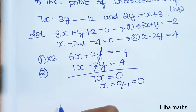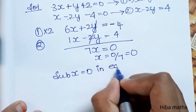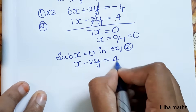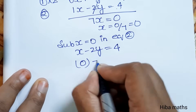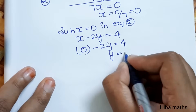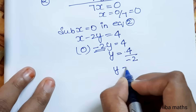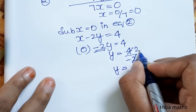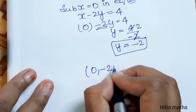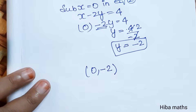x = 0 ÷ 7, which equals 0. Now substitute x = 0 into equation 2: x - 2y = 4. So 0 - 2y = 4, which gives y = 4 ÷ (-2) = -2. Therefore the first intersection point is (0, -2).